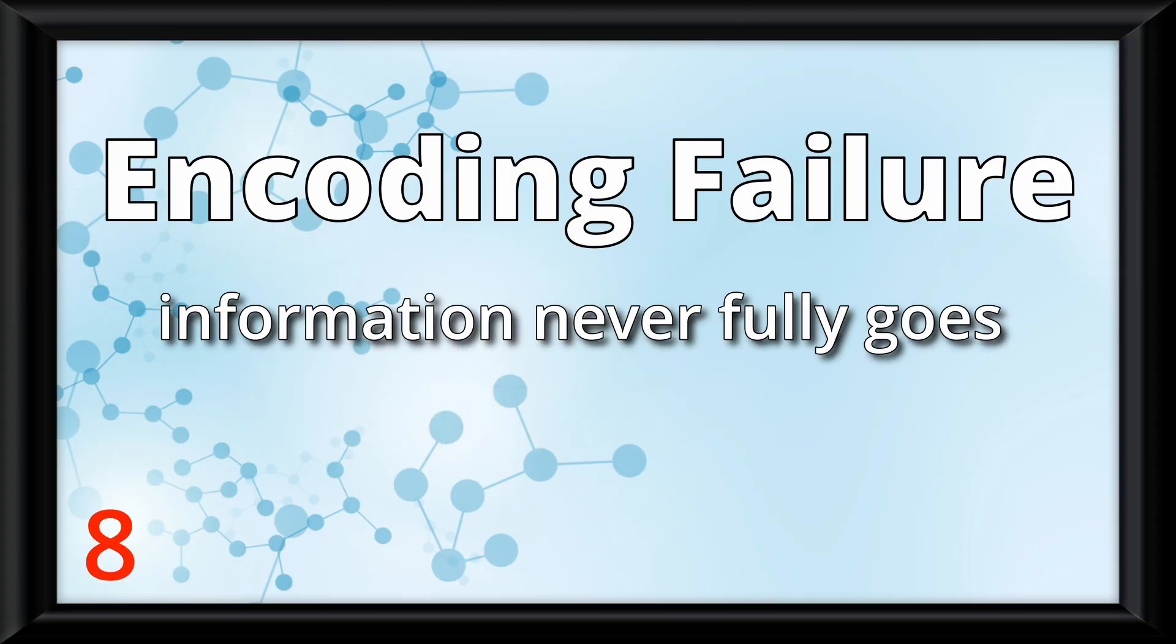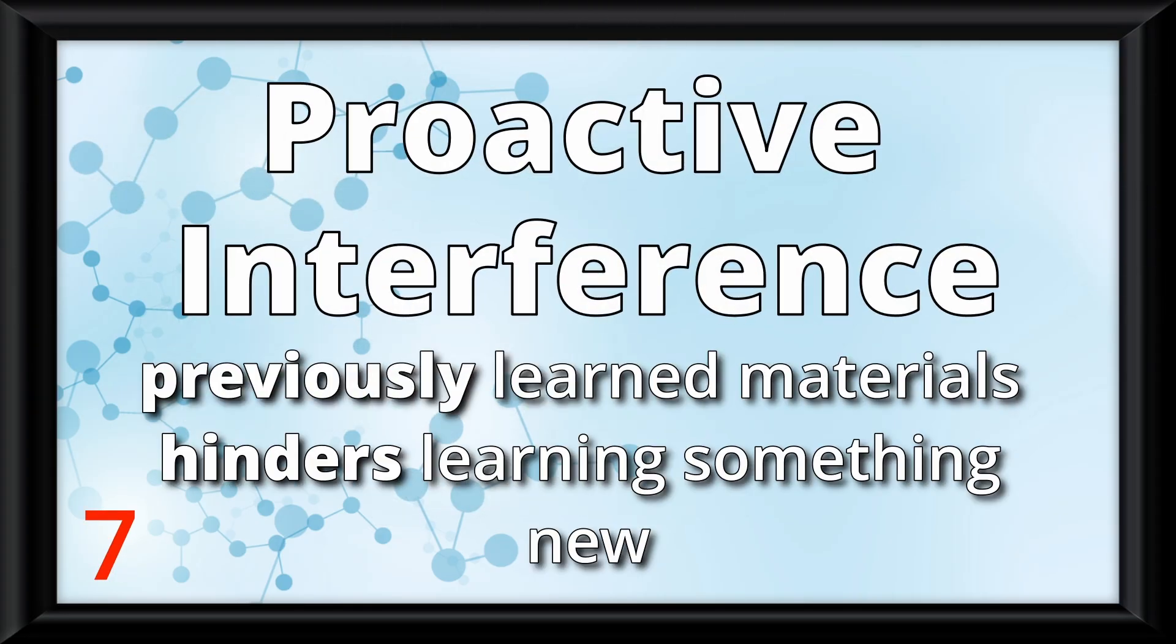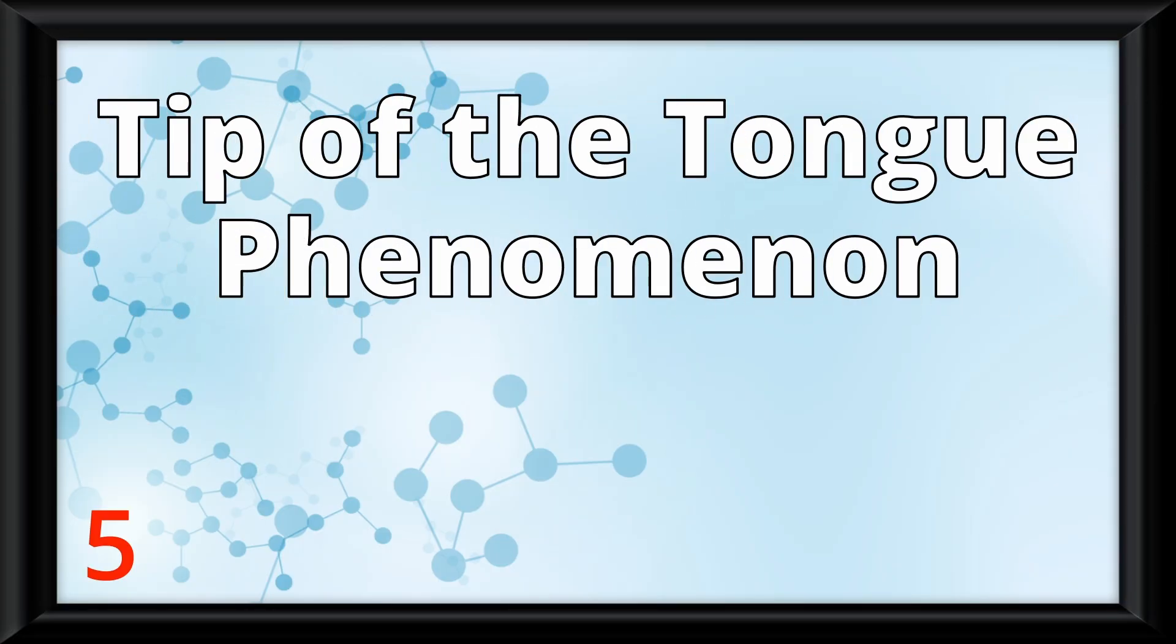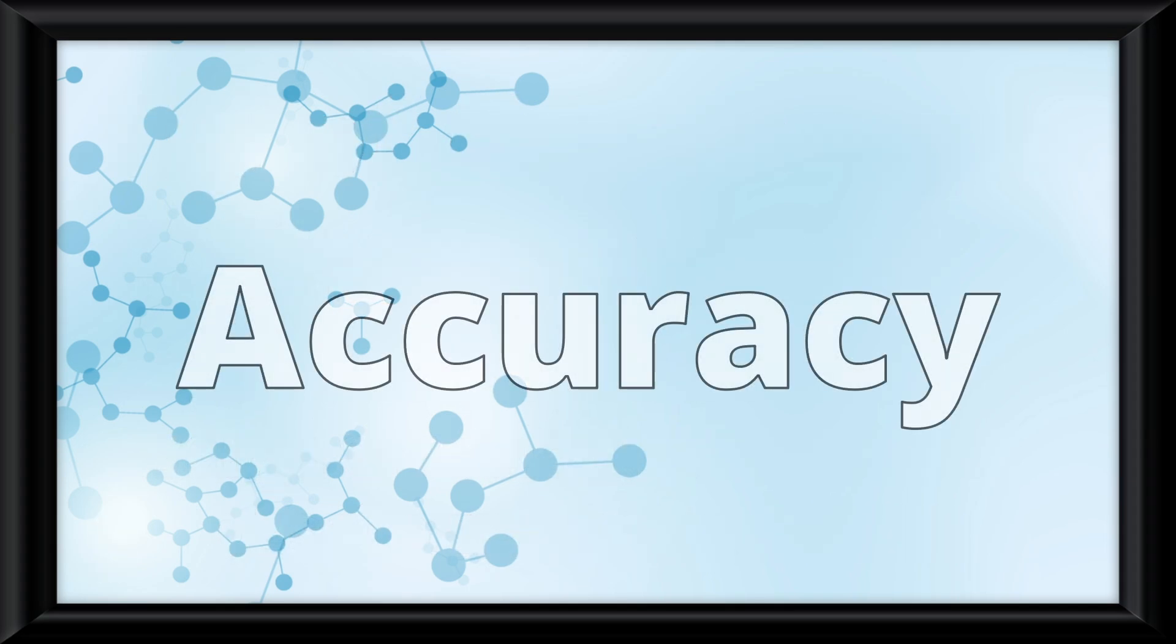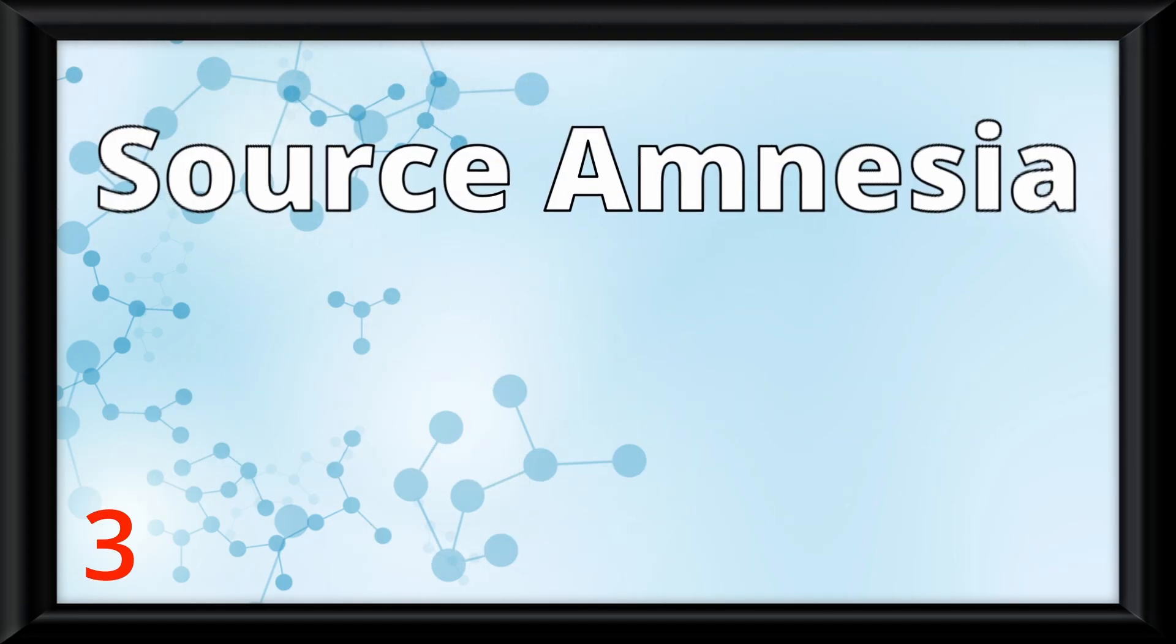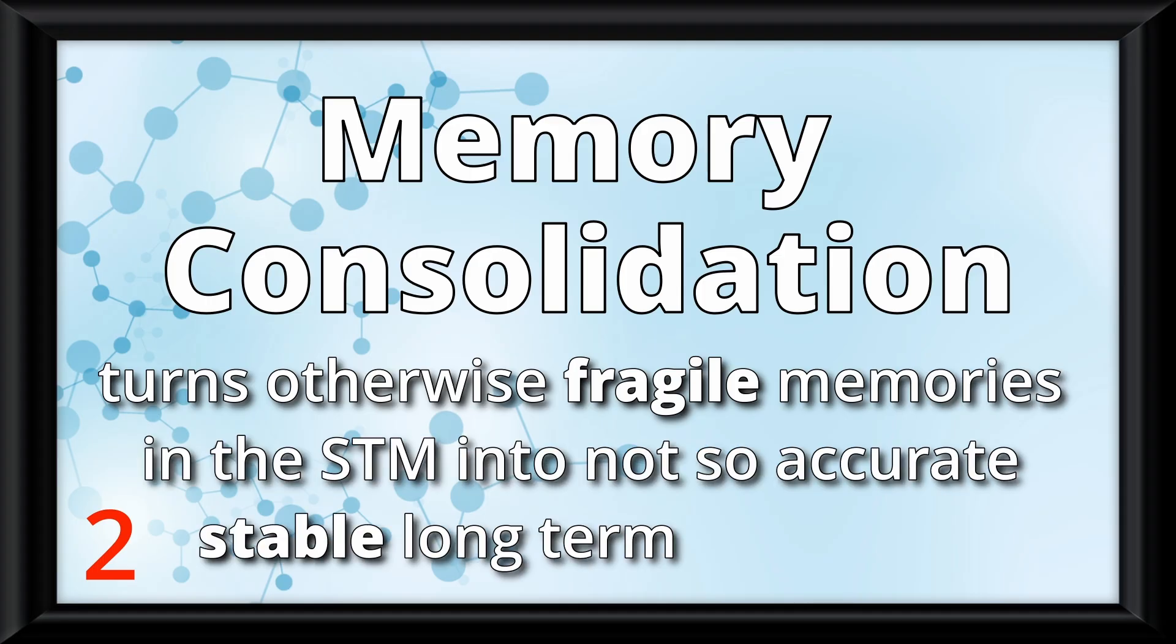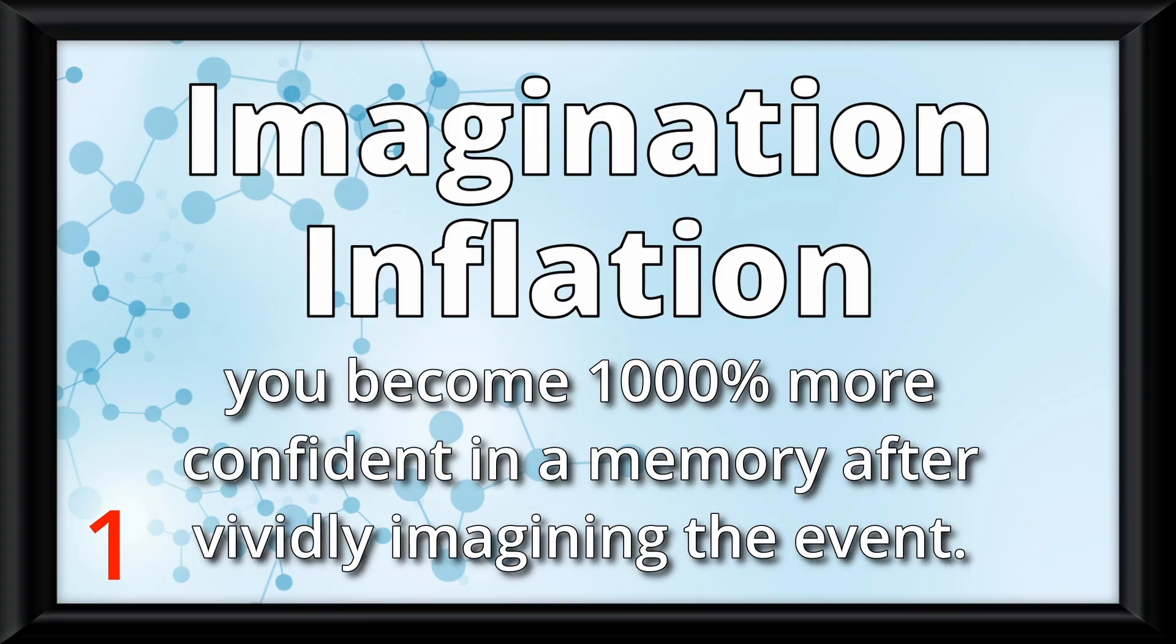Encoding failure is when information never fully goes from the short-term to long-term memory, and simply gets forgotten. Proactive interference is where previously learned materials hinders learning something new, whereas retroactive interference is where newly learned materials hinders the memory of previously learned materials. There is also inadequate retrieval, with a good example being the tip of the tongue phenomenon, where you feel like you're on the verge of retrieving something despite not being able to. There are also things that can affect the true accuracy of memories. The misinformation effect is when you are told something completely wrong about an event and therefore misremember it. Source amnesia is where you can recall an event or information, but not where or whom you learned it from. Memory consolidation turns otherwise fragile memories in the short-term memory into not-so-accurate, stable long-term memories. And imagination inflation is where you become a thousand percent more confident in a memory after vividly imagining the event.